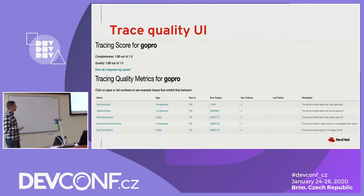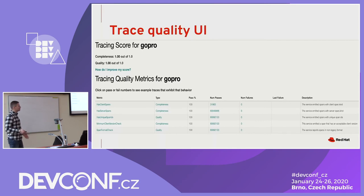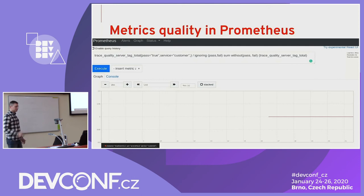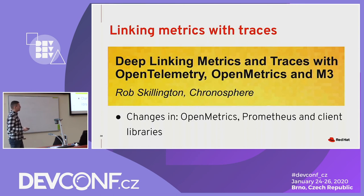I thought about how we can calculate just one KPI number indicating the quality of your instrumentation — we don't want to look at many metrics. I think it's possible with the Prometheus query language: you sum up the numbers and divide by the total count. But the problem remains: how do you then navigate to the trace instances, to the trace exemplars?